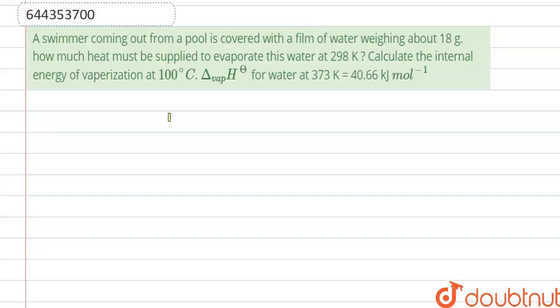A swimmer coming out from a pool is covered with a film of water weighing about 18 grams. How much heat must we supply to evaporate this water at 298 kelvin? Calculate the internal energy of vaporization at 100 degree celsius. Heat of vaporization is given for water at 373 kelvin is 40.6 kilojoule per mole. So here the water changes from liquid to gas.